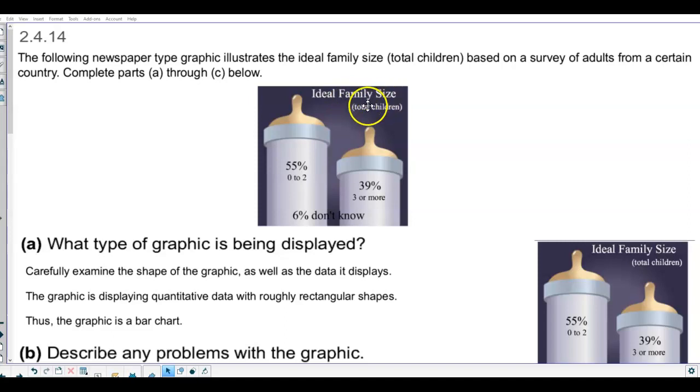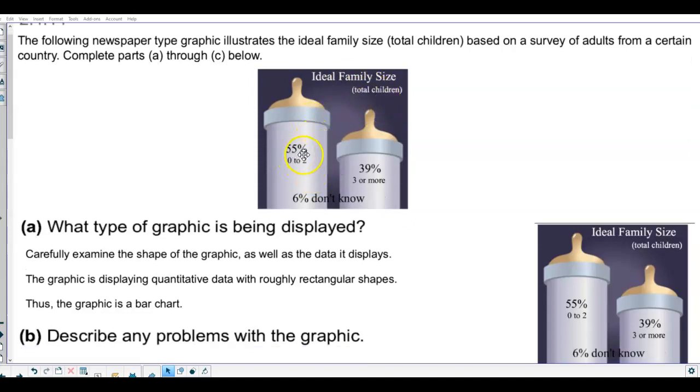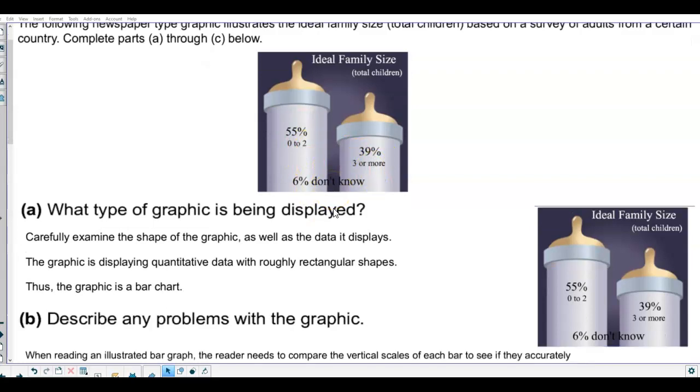Here we have ideal family size, total children. We have 55% 0-2, 39% 3 or more, 6% don't know. Now what type of graphic is being displayed?